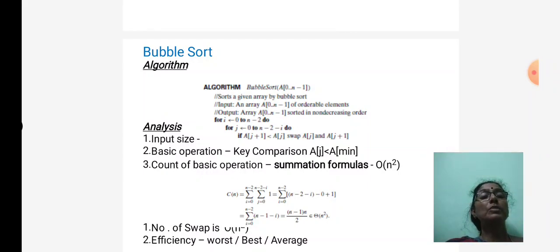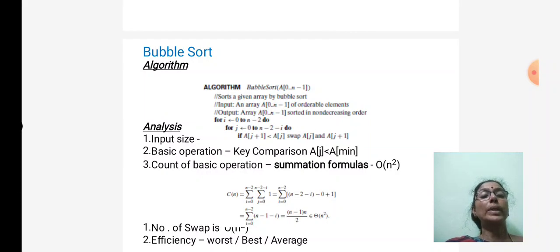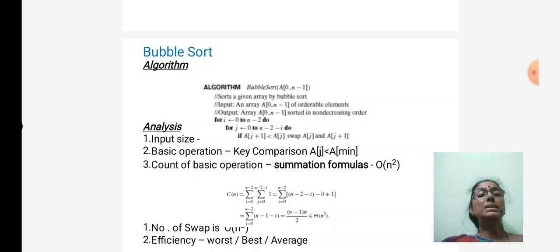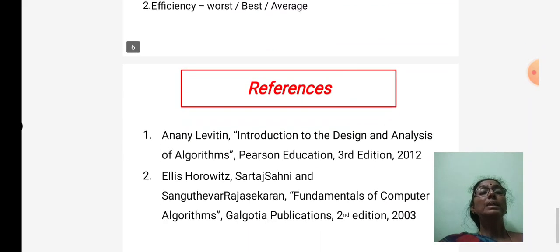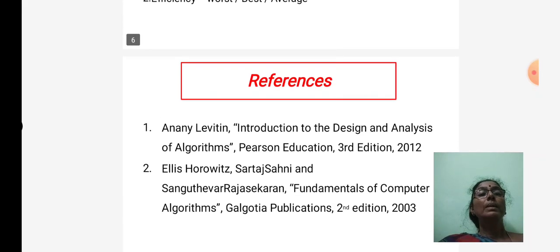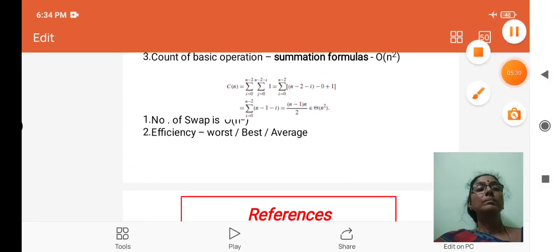Using the summation formula with the two for loops, we find how many times the basic operation is executed — the result is of the order n squared. The number of swaps in bubble sort is also of the order n squared. The efficiency of the algorithm is calculated based on worst case and average case analysis. Therefore, the overall time complexity of bubble sort is O(n²).